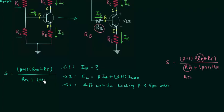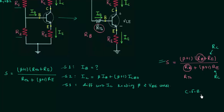If you remember the stability factor for emitter bias configuration, you can easily find the stability factor for voltage divider configuration. Using this same expression, we can also find the stability factor for collector feedback biasing — the only difference is that Re is replaced by Rc. So for collector feedback biasing, replace Re with Rc; for voltage divider bias, replace Rb with Rth.